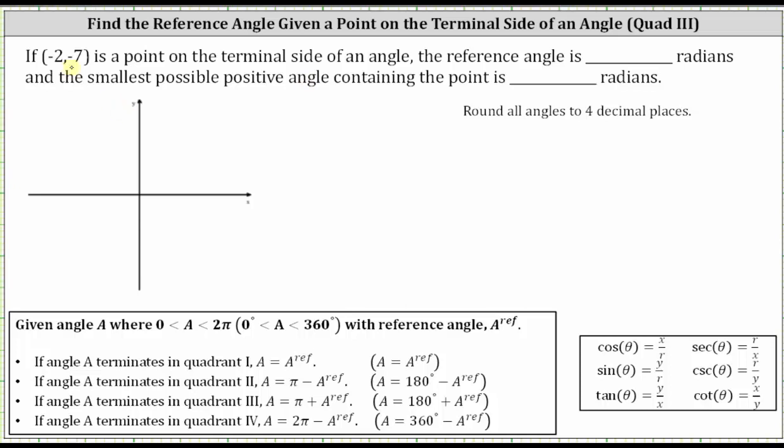Let's first plot the point negative two comma negative seven. Because we're looking for the smallest possible positive angle containing this point, the initial side is along the positive x-axis, and the terminal side passes through the point.